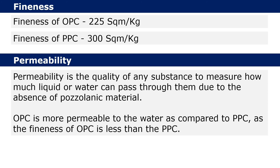Permeability is the quality of a substance that measures how much liquid or water can pass through it. Due to the absence of pozzolanic material, Ordinary Portland Cement is highly permeable to water. On the other hand, Portland Pozzolana Cement is less permeable and is suitable for structures such as bridge piers or foundations where waterproofing is recommended.